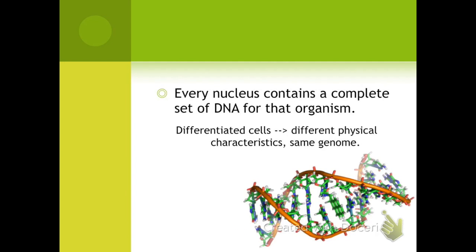In a multicellular organism, every cell that contains a nucleus also contains a complete set of DNA for that organism. It contains the genes to do anything and to become anything. But differentiated cells use only part of that genome in their development. So though they contain the same genome as every other cell, their physical characteristics are much different.